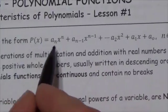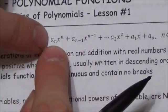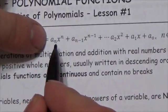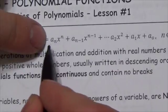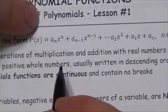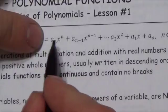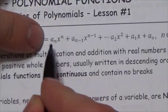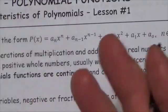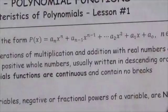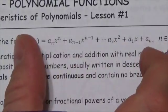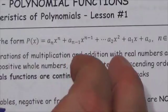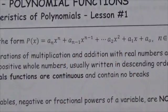Don't get thrown off by the notation. a sub n simply means — for example, if I had a sub 5 — that would be the coefficient of the x^5 term. The index tells you which coefficient it is, not the value of the variable. They can be any real numbers. So a polynomial is basically just powers of x with real number coefficients.